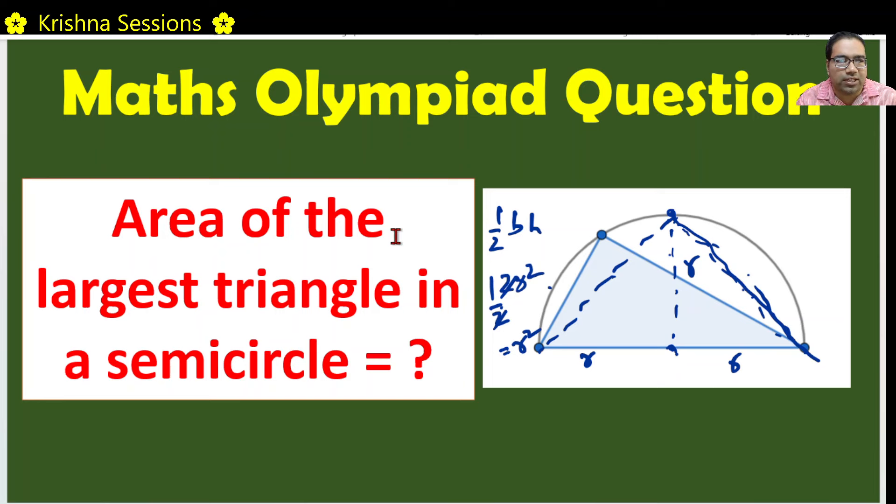The area of the largest triangle in a semicircle is actually R squared. Hope you understood this. Thank you guys.